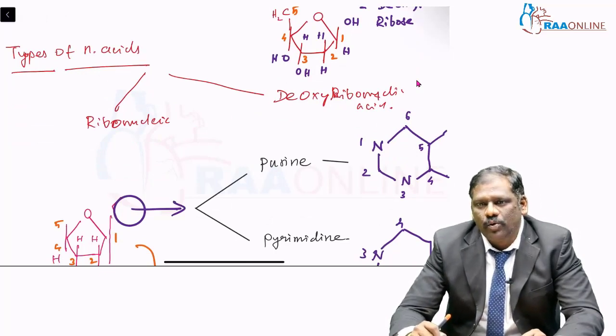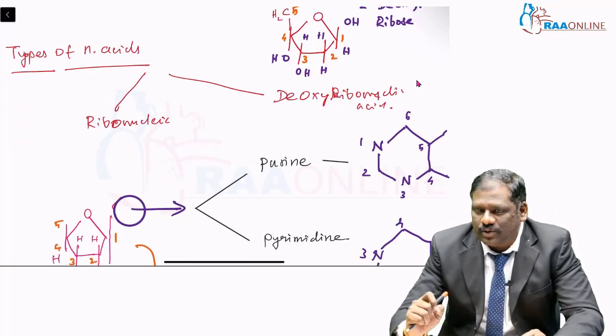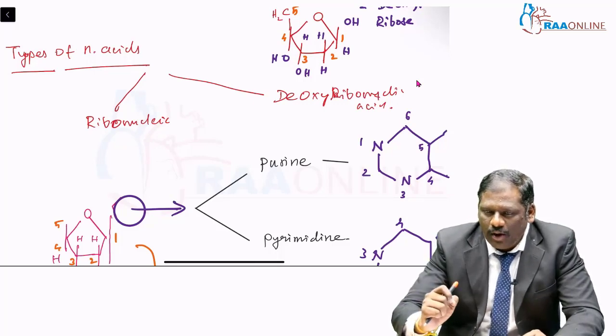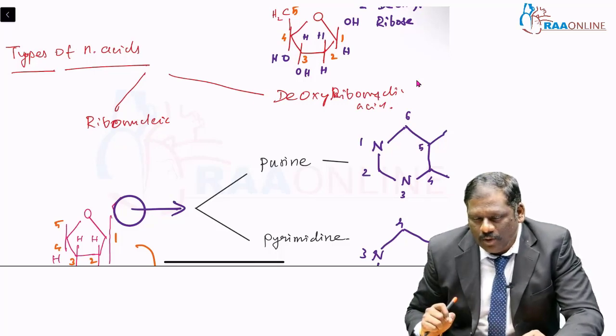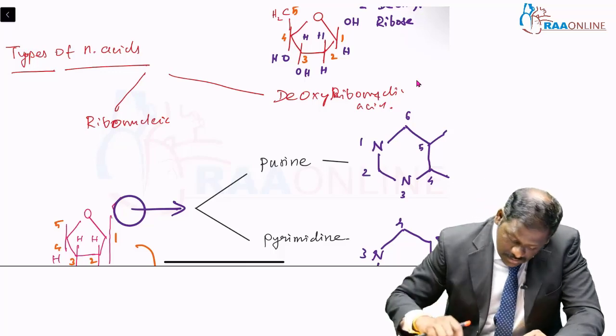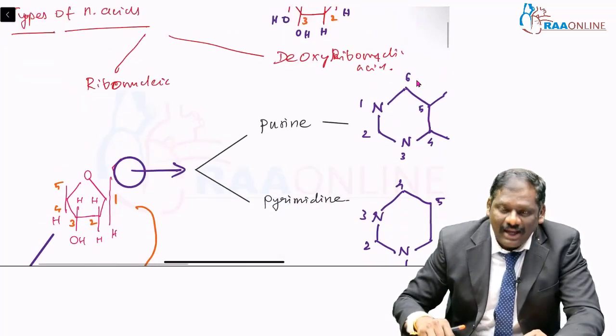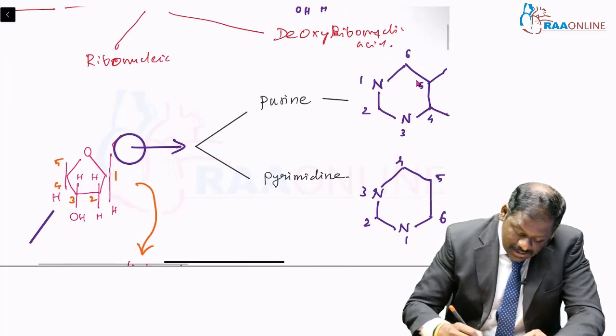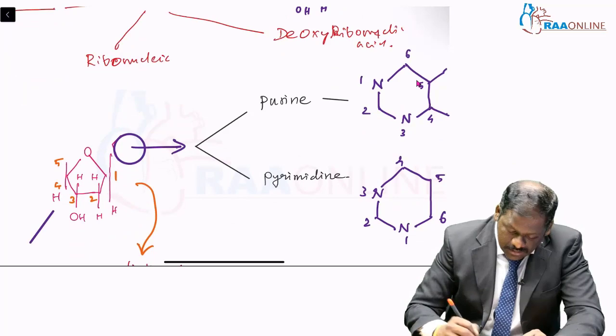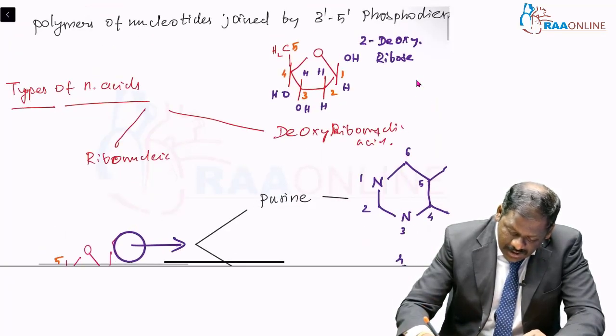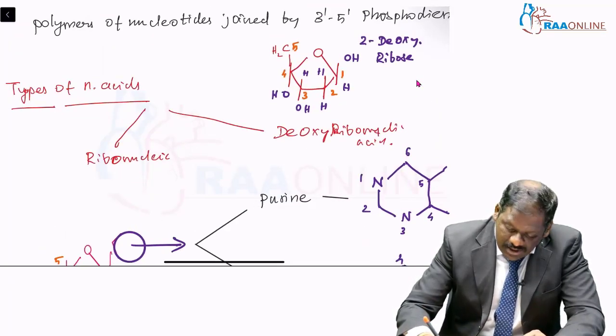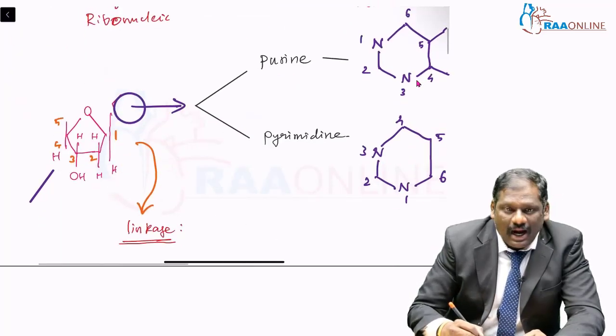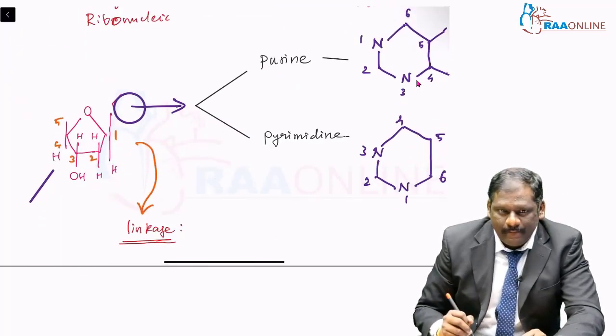That base could be a nitrogenous base. That base could be either a purine or a pyrimidine. These nitrogenous bases, where do they get attached in this structure? They get attached at the first position. This is the first carbon I explained. Instead of that OH, this nitrogenous base will get attached here.